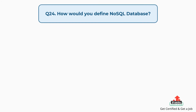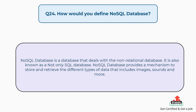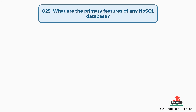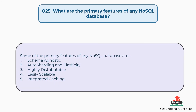Question number twenty-four: How would you define a NoSQL database? A NoSQL database is a database that deals with a non-relational database. It is also known as a not-only-SQL database. NoSQL database provides a mechanism to store and retrieve different types of data that includes images, sounds and more. Question number twenty-five: What are the primary features of any NoSQL database? Some of the primary features are: schema agnostic, auto sharding and elasticity, highly distributable, easily scalable, and integrated caching.